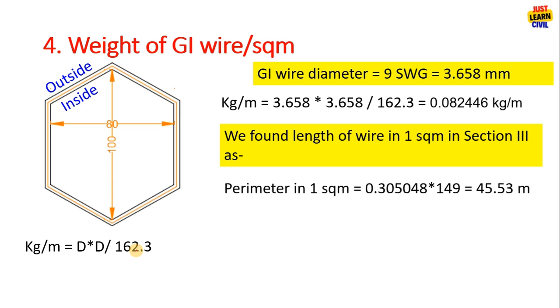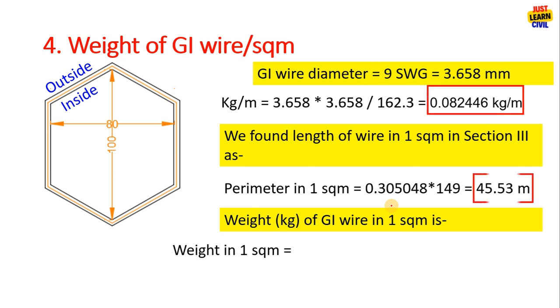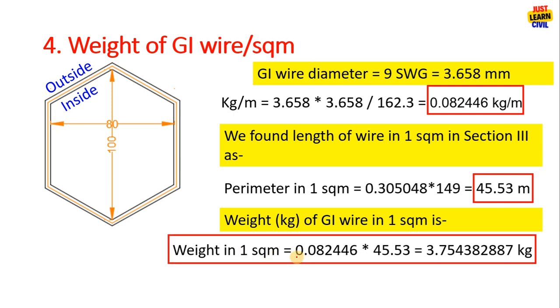Now weight of GI wire in one square meter: when you multiply this length and kg per meter you get the weight of GI wire in one square meter, 37.543 kg in one square meter.